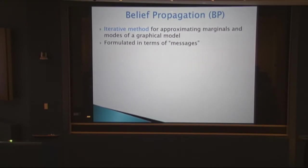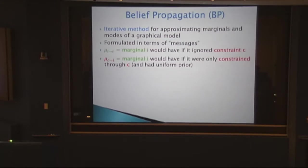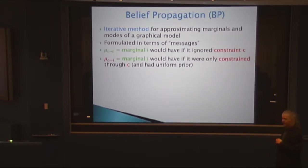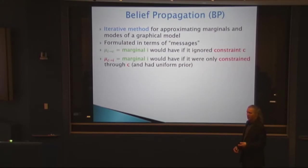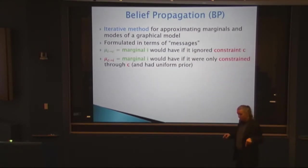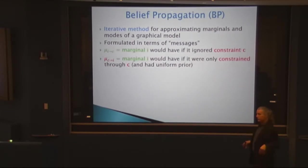Belief propagation is formulated in terms of messages. These are modified marginals: either ignoring a constraint or only using a certain constraint. One message goes from variable i to constraint c — variable i tells constraint c what its probability distribution would be if it ignored that edge. So I see the rest of the world but forget that I have a direct connection to Jennifer. This marginal is calculated by leaving out constraint c and connecting to the rest through all other constraints.